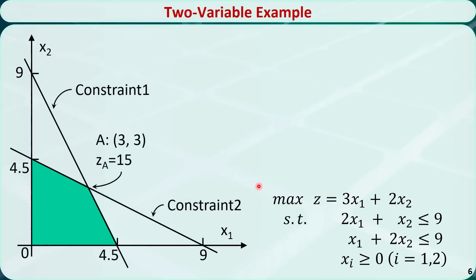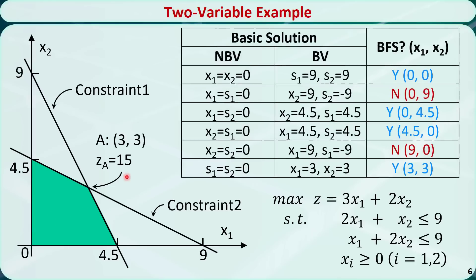To illustrate these theorems, let's recheck this example. The feasible region is a shaded area — it is indeed a convex set. This table shows the basic feasible solutions. The first BFS (0, 0) corresponds to one extreme point; the second BFS (0, 4.5) corresponds to another; the third BFS (4.5, 0) to another; and the last BFS (3, 3) corresponds to the final extreme point. We only have four basic feasible solutions, which is a finite number.